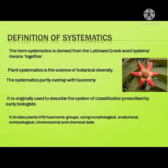Diversity is about all the genetic regions that are present in a plant. Systematics was originally used to describe the system of classification prescribed by early biologists. It divides plants into taxonomic groups using morphological, anatomical, embryological, chromosomal, and chemical data.